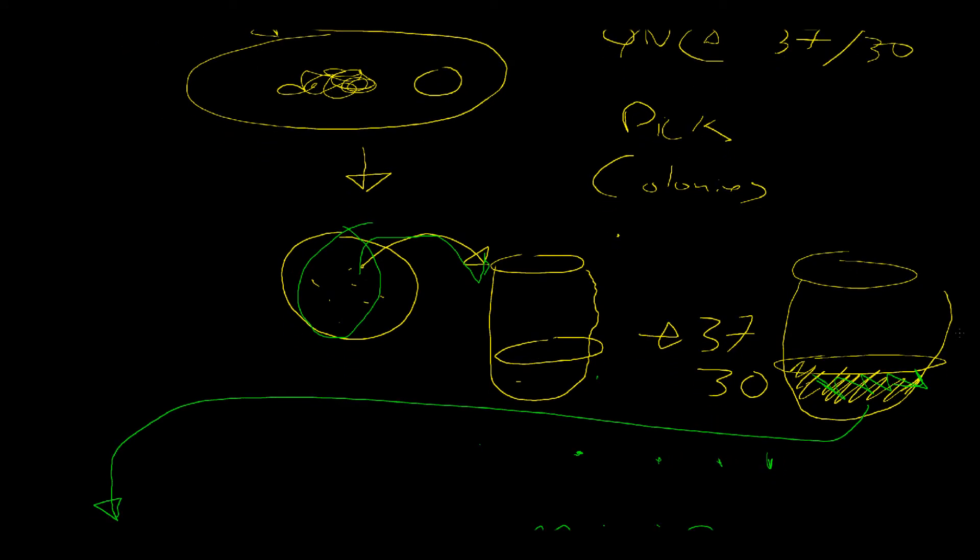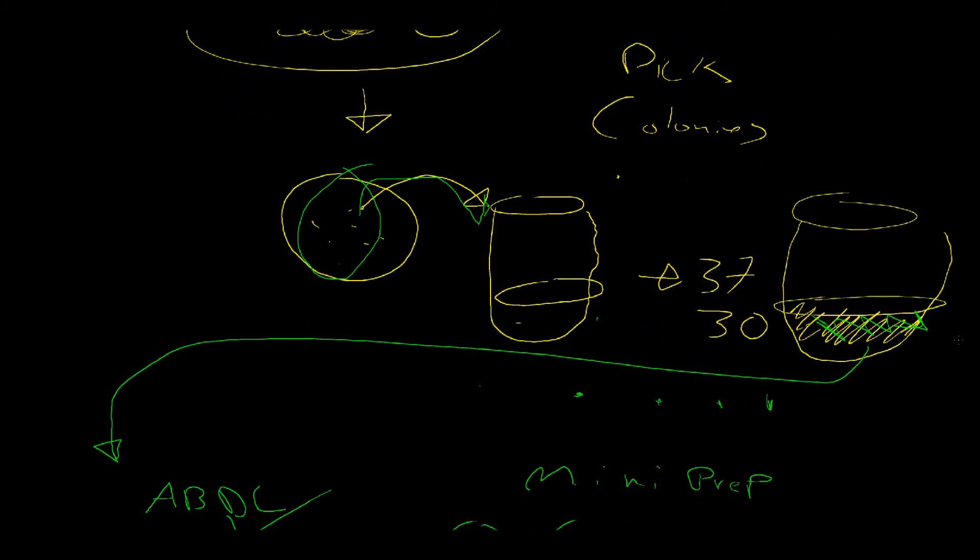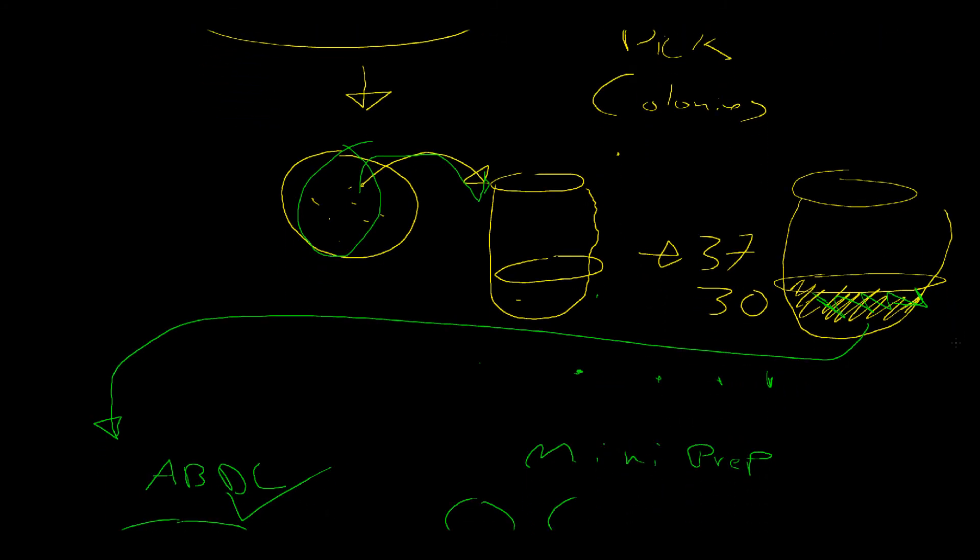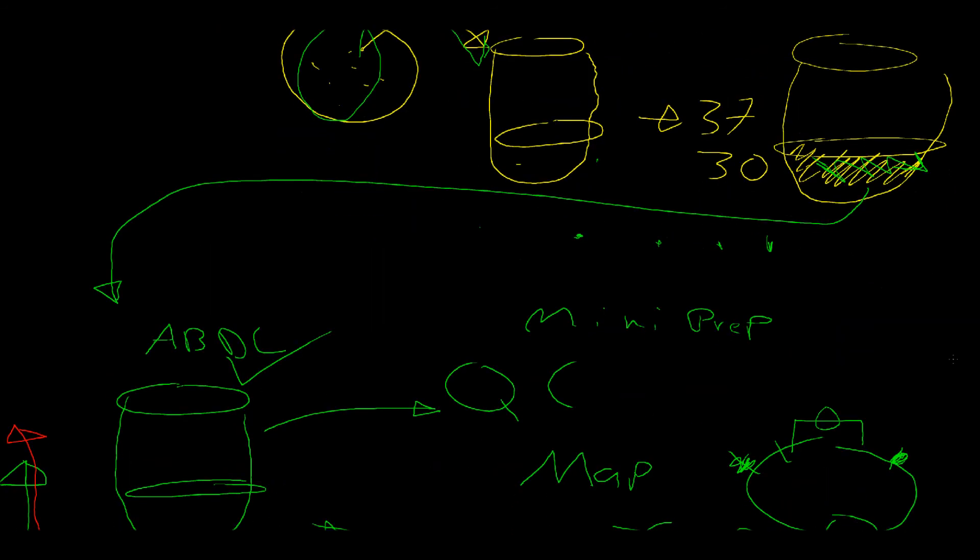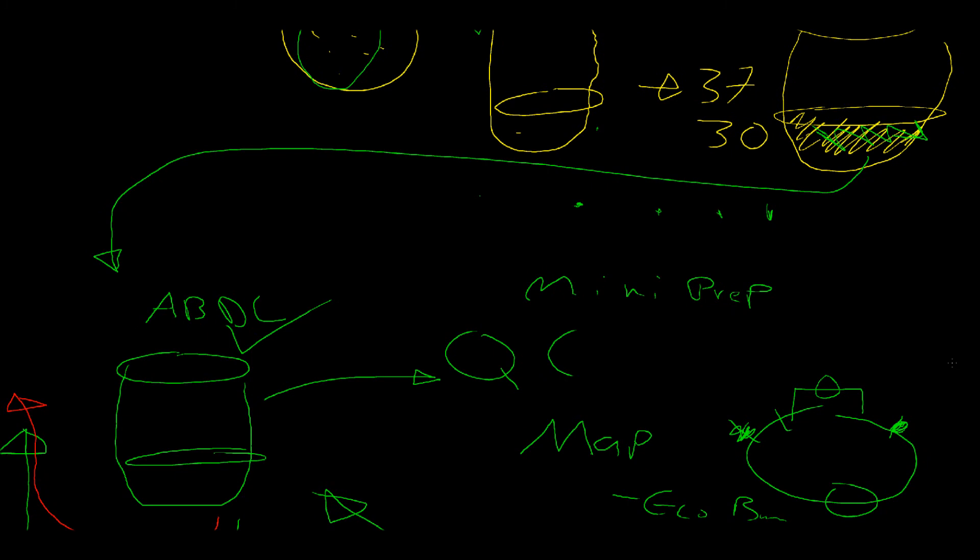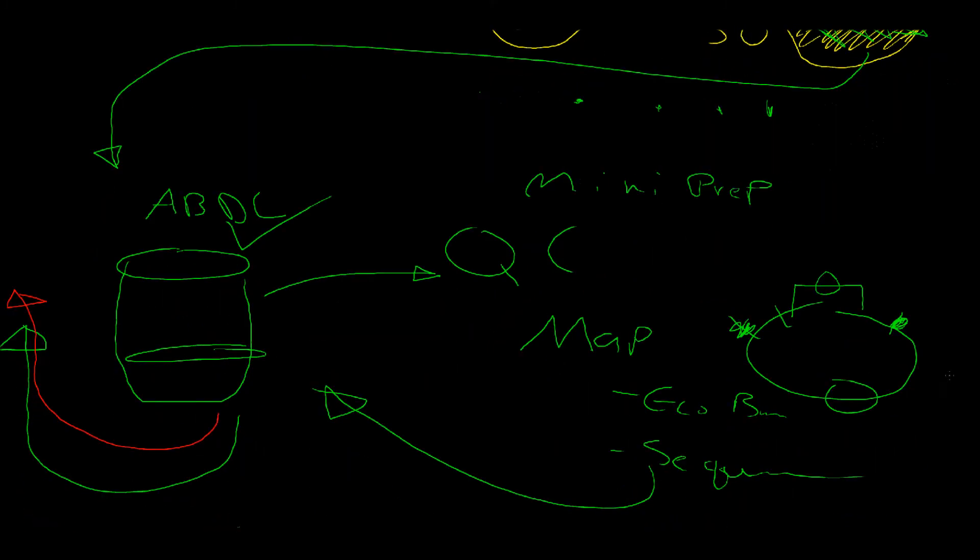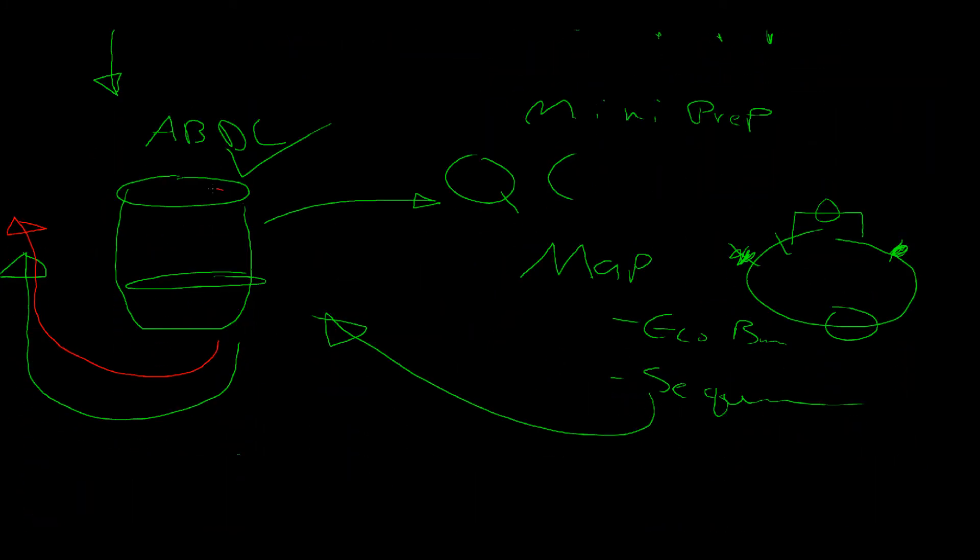Pick colonies into clear LB, 2YT, SOB broth, or whatever our media is. We put that in the shaker overnight at 37 degrees, or if you're using a temperature-sensitive origin at 30 degrees. You go from clear LB media to cloudy LB media. That means that you have saturated culture. From there, you mini prep.